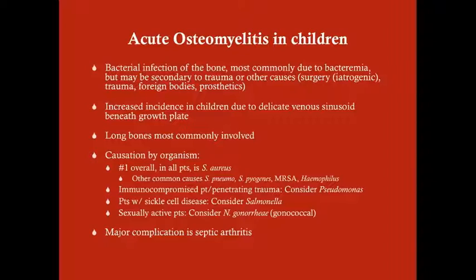Why are children at increased risk? In bones, underneath and around the growth plate, there is a venous sinusoid that gets very, very slow blood flow. Anytime you have slow blood flow, you're at increased risk for clotting and infection. So if a child has significant bacteremia — for instance, if they had strep throat or a staph infection that got into their blood — they are at high risk for osteomyelitis because that blood ultimately goes through this sinusoid and moves very slowly, allowing bacteria to proliferate.